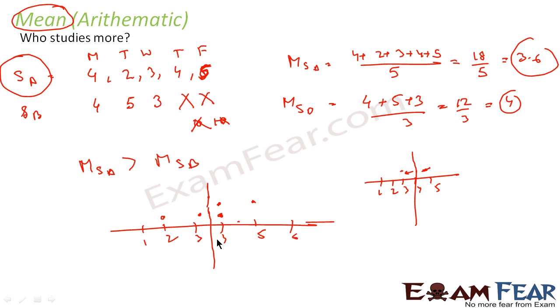Central tendency is where the center of the data lies, and that is the mean in this case. Mean is you add all the numbers, divide by number of numbers, you get the mean. From mean we found who studies more—student A studies more than student B.